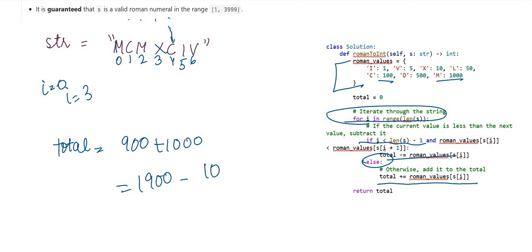Next, C is I now. This is I plus 1. I is 4. So I is less than I plus 1, C is less than 1? No. So we will add C value. That means it will become 1990.